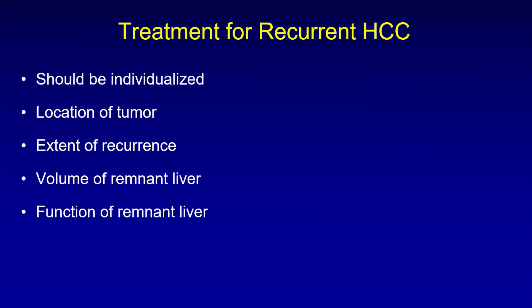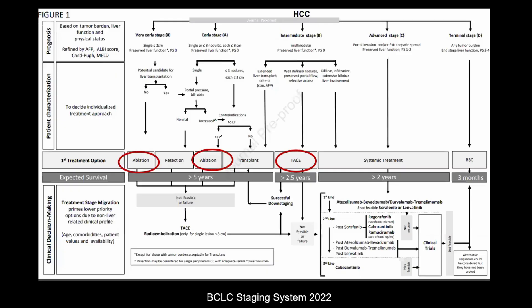The treatment for recurrent HCC should be individualized. It will depend upon the location of tumor, extent of recurrence, volume of remnant liver, and the function of remnant liver. The BCLC staging system that we fall back upon for the management of primary HCC is also used for recurrences, and ablation and TACE are used for lesion sizes similar to what we use for the primary tumors.